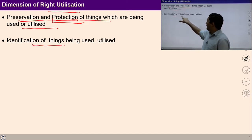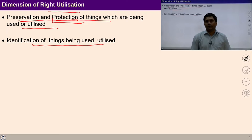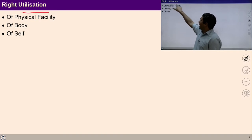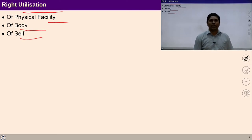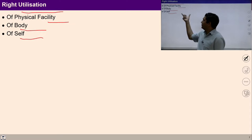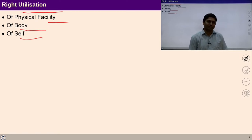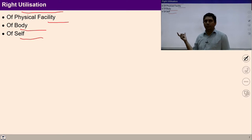There is also a need to identify our real needs — things which are being used or utilized. We can do right utilization of physical facility, right utilization of the body, and right utilization of the self. Right utilization is required at the level of physical facility, at the level of body, and at the level of self. If we rightly utilize all three, then preservation of nature and prosperity can be ensured.